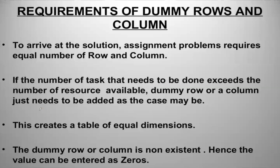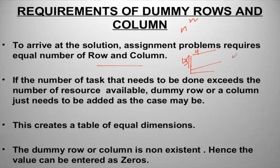There are a few requirements of the assignment problem. It should be an N×N matrix — number of rows and columns must be equal. If not equal, it is called an unbalanced assignment problem. In that case, you add a dummy row or column as needed. For example, if you have three rows and four columns, add one dummy row to make it a 4×4 matrix. The dummy row or column is non-existent, so values are entered as zeros.